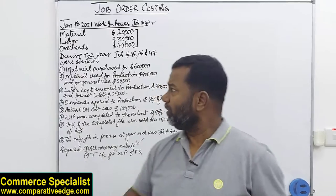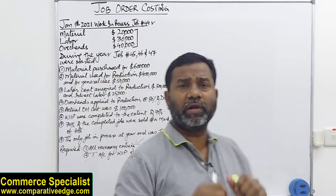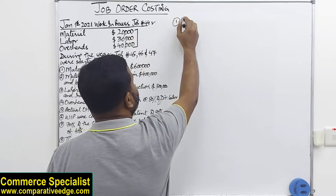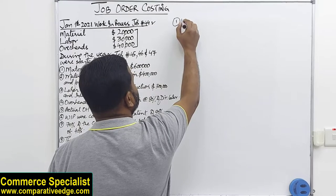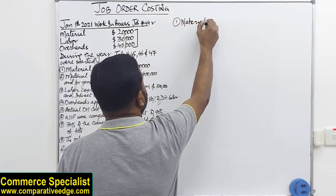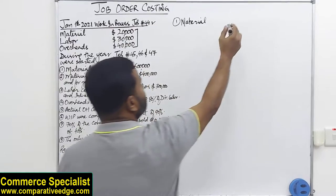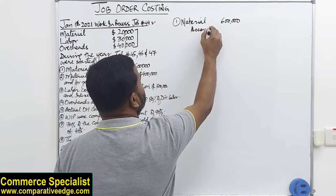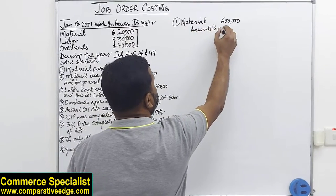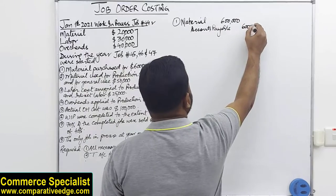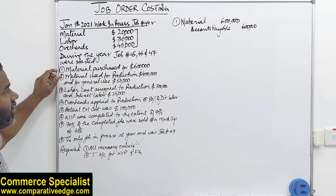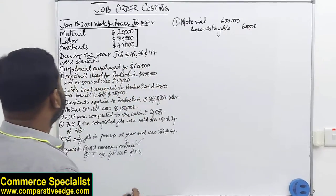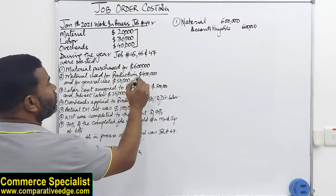When we purchase material, the double entry is: debit material (or raw material) 600,000 and credit accounts payable 600,000. This is the first entry — when materials are purchased for 600,000, you debit material and credit accounts payable.